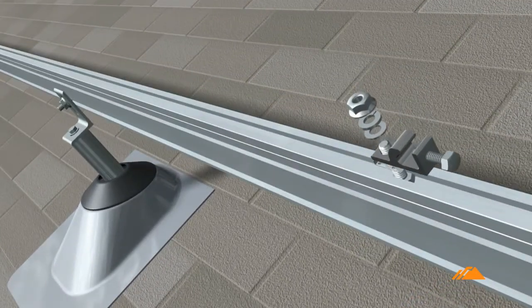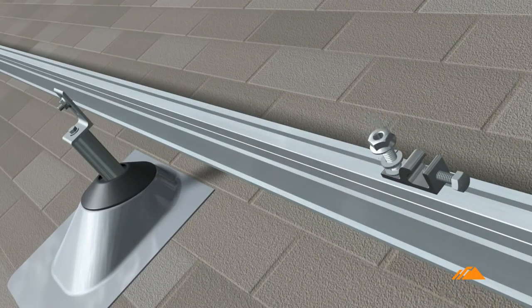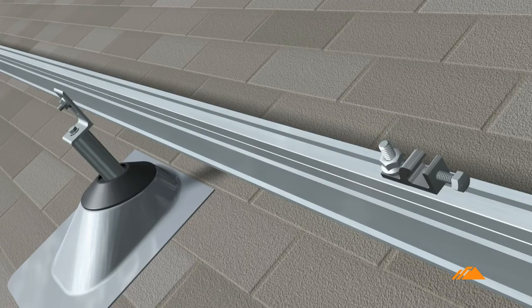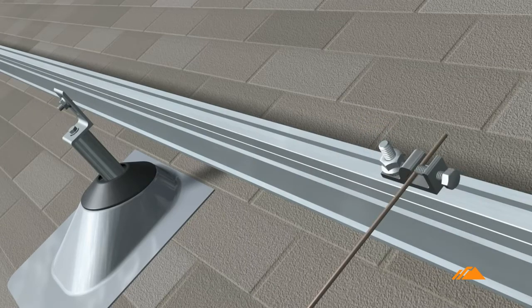Attach a grounding lug to the same rail as the grounding straps. Secure the grounding conductor within the lug.